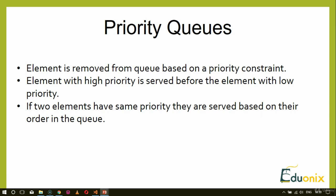In layman terms, the waiting room at a hospital's emergency department operates using a priority queue. When a patient enters the emergency department, a nurse assesses the severity of the patient's condition and assigns a priority code. Patients with a high priority code are seen before patients with a lower priority code. Patients with the same priority code are served on a first-come first-served basis.